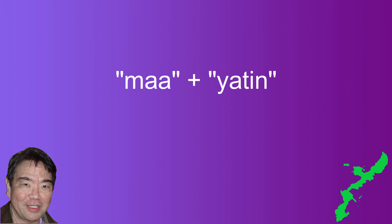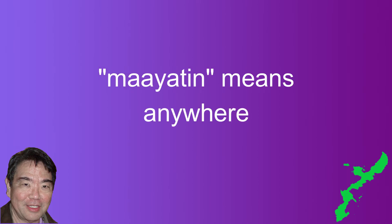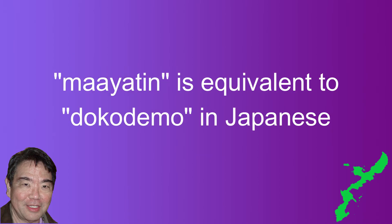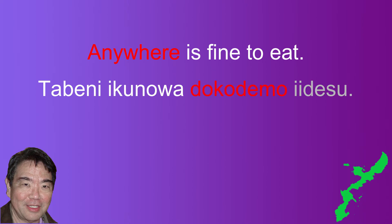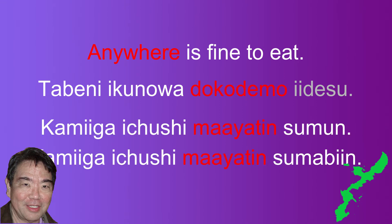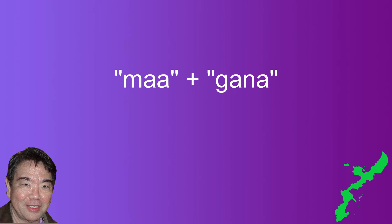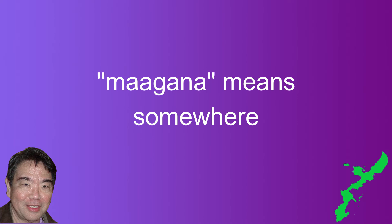The next example is "ma" used with the sentence particle "yatim," which we covered in video 46. "Ma yatim" means "anywhere" (positive context), equivalent to Japanese "doko demo." The example is "anywhere is fine to eat." In Japanese: "tabeni iku no wa doko demo ii desu." In Uchinaguchi: "kami ga ichu shi ma yatim sumun" in casual form and "kami ga ichu shi ma yatim sumabin" in polite form.